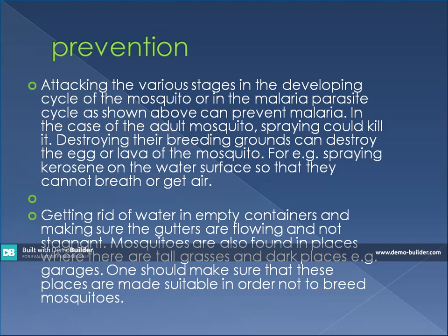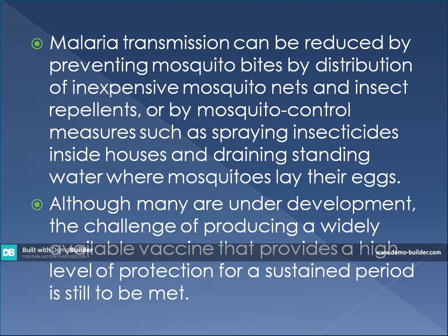If we have empty containers in our houses or workplaces, gutters, or flower beds that have collected water, these should be emptied because they become breeding sites for mosquitoes. Also, tall grasses and dark places like garages should be kept clean so they don't serve as breeding sites. Malaria transmission can also be reduced by sleeping under insecticide-treated nets, known as ITNs. Some people use insecticide repellents, or mosquito control measures such as spraying insecticides inside houses and draining standing water where mosquitoes may lay their eggs.